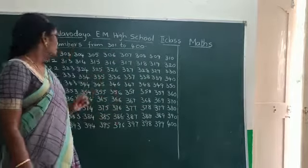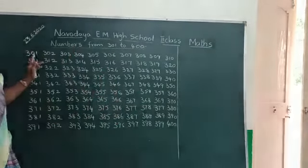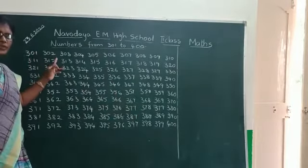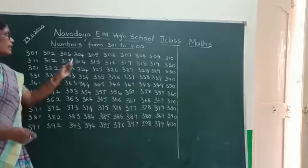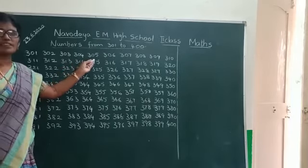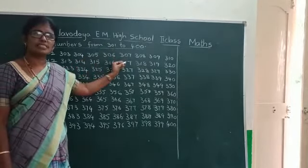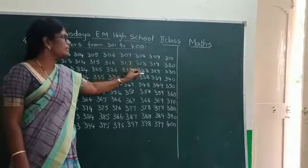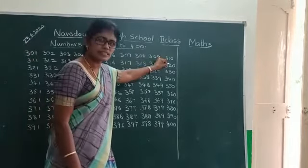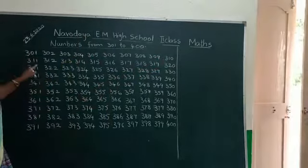Ok children, let us read the numbers. 301, 302, 303, 304, 305, 306, 307, 308, 309, 310, 311.